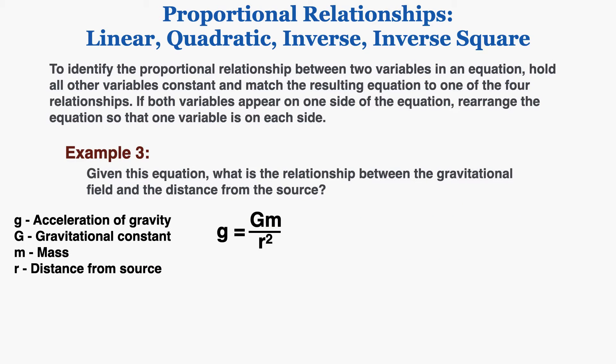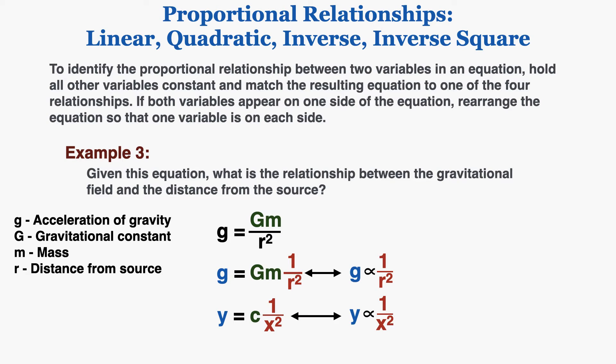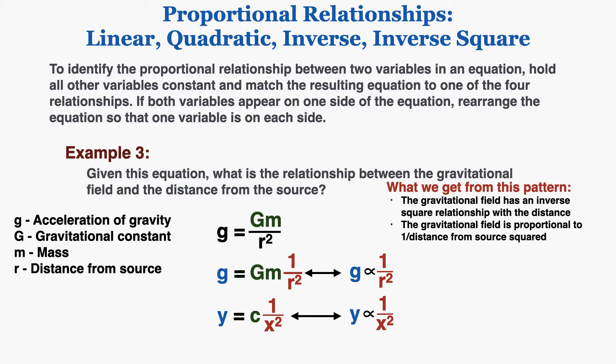Example three: given the gravitational field equation, what is the relationship between gravitational field g and distance r from the source? Holding the other variables constant and rearranging to draw out 1 over r squared, the equation fits the form y = k·(1/x²), meaning y is proportional to 1 over x squared. So the gravitational field is proportional to 1 over distance squared — an inverse square relationship — and the graph of gravitational field versus distance takes that inverse square shape.